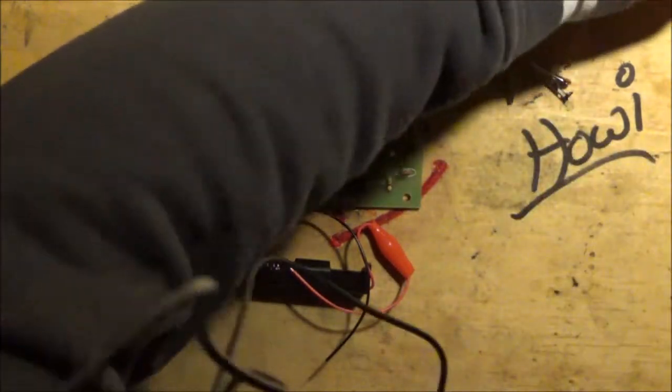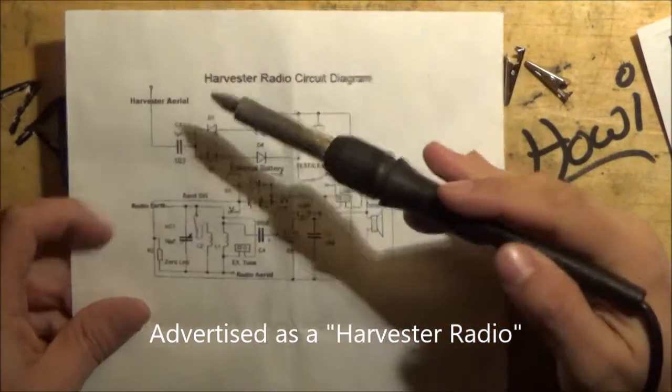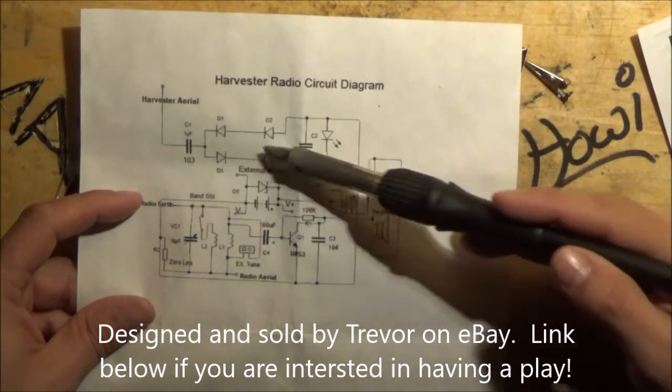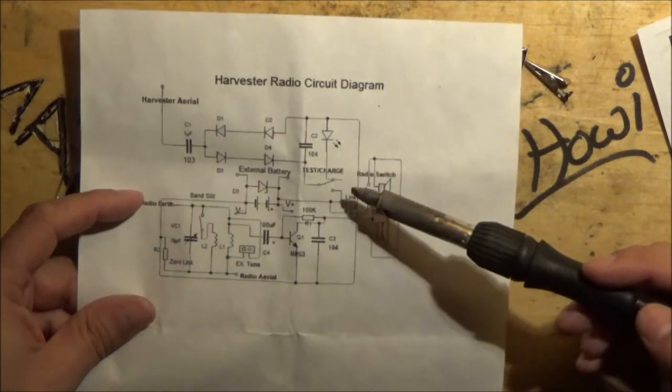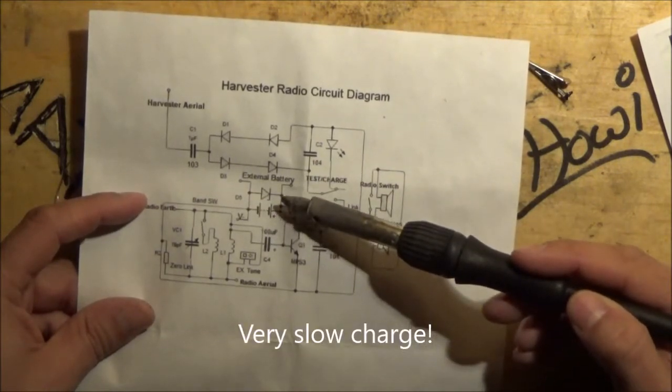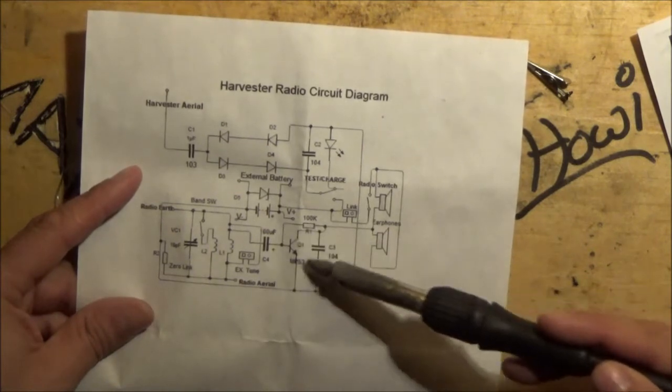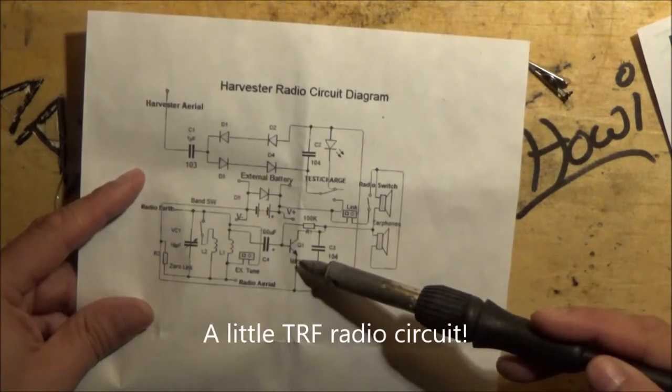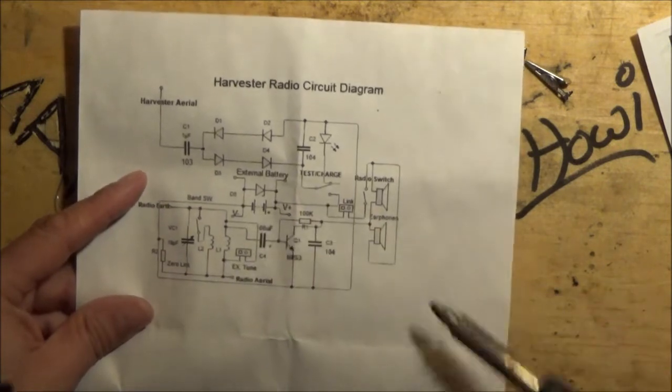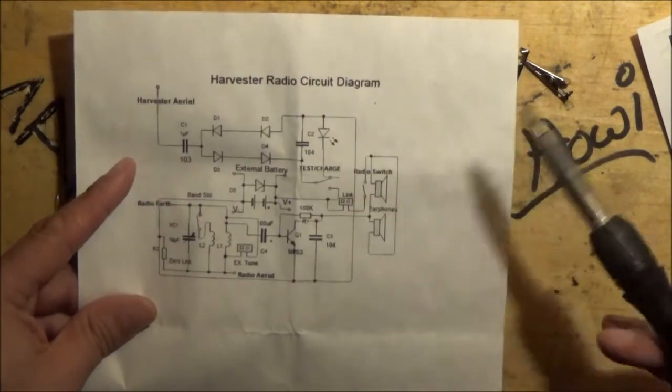Basically, just as a quick reminder, this is a harvester radio. Effectively, an antenna here and we have some diodes which will rectify the signals that are coming in. Those signals can then be used to charge an external battery, which the charge voltage is limited by a Zener diode here. Then that external battery can be used to drive a transistor, which gives you the ability to rectify and receive shortwave signals. There's an external tuning capacitor and various other things that we can wire up to this. We're not going to do all of this today. I just want to prove the principle to you.